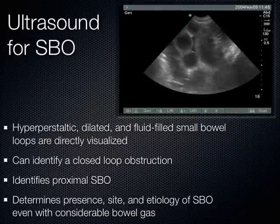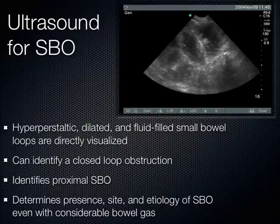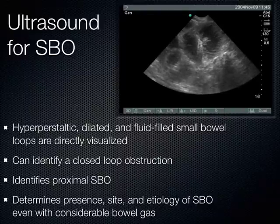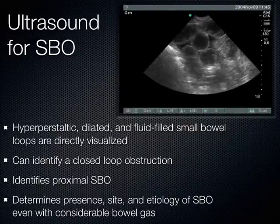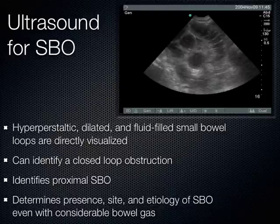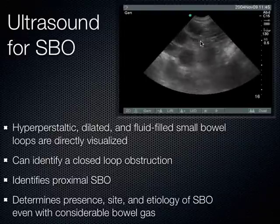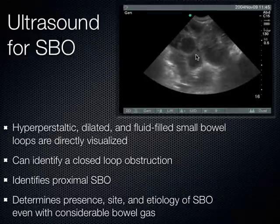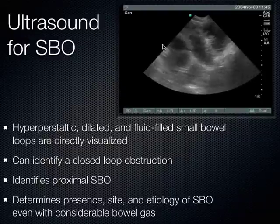What we see initially are hyperperistaltic, dilated, and fluid-filled small bowel loops that we directly visualize with ultrasound, evidenced by their plicae circularis. That tells us this is indeed small bowel. This patient had such a bad small bowel obstruction there was perforation, and fluid leaked out between these loops of bowel. Fluid is always black on ultrasound, and we can see these anechoic wedges of free fluid between different loops of bowel.